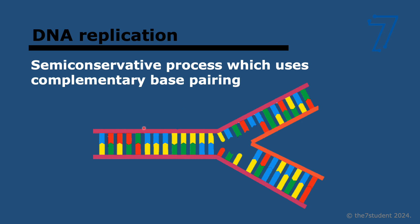For example, when you're growing, when you're a kid and you become an adult, you have to create a lot of new cells and each of those cells needs its own set of DNA. Similarly, with tissue repair, when you get a wound, you need to create new cells and each cell also needs a full set of DNA.